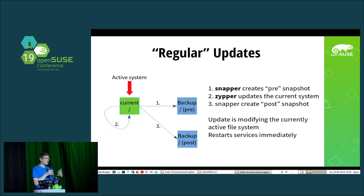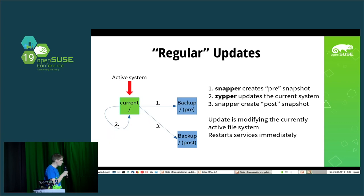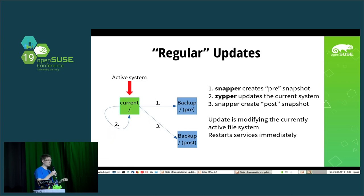With regular updates, we currently have a combination of snapper and zypper operating on a Btrfs file system, if you're doing a default installation of OpenSUSE. What actually happens is you get a new snapshot of your currently running system, then the system is updated, and then you get a post-snapshot with the new state after installation. So you can roll back if anything done after the installation destroyed your system. But the problem is we have that update running in the currently running system, so if anything breaks during the update, you've destroyed your current system and your system is down for that time.